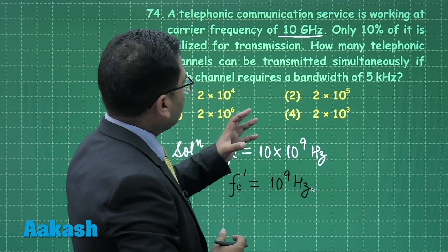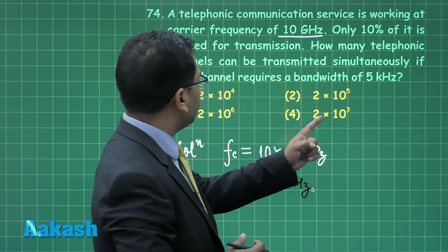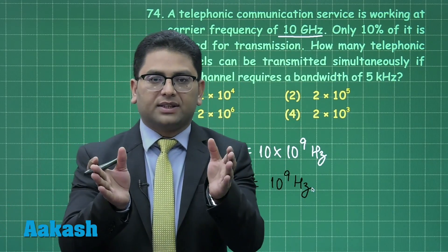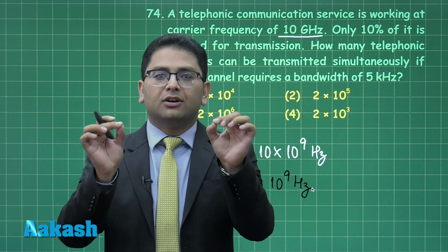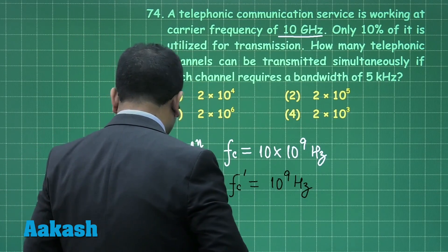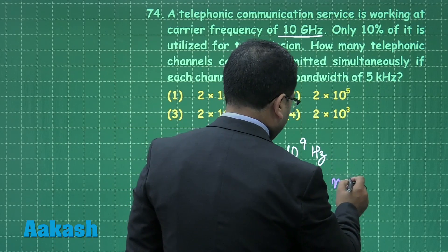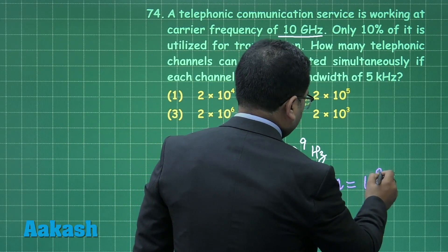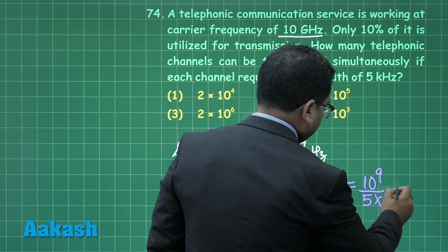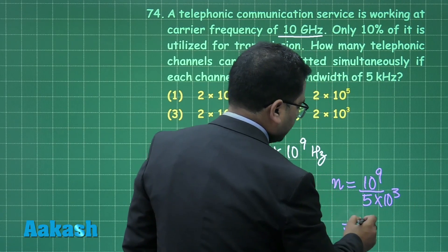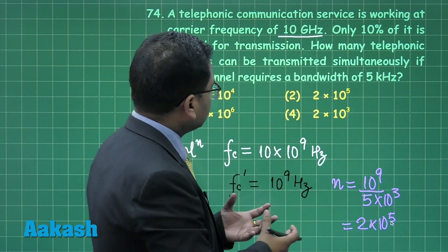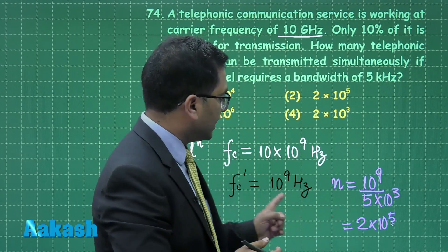How many telephonic channels can be transmitted simultaneously if each channel requires a bandwidth of 5 kilohertz? In other words, the width of 5 kilohertz is consumed by one channel. So quite obviously, the number of channels N is going to be 10 raised to the power 9 divided by 5 kilohertz, that is 5 times 10 raised to the power 3, and that comes out to be 2 times 10 raised to the power 5.